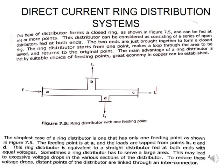The advantage is that by suitable choice of feeding points, you could have greater economy in the copper used in the system. Your line length might be shorter than going from A to D or A to C directly, because now you're just going from A to B and D to A, with shorter lines in between. The simplest case of a ring distributor is one with only one feeding point. Point A is the feeding point, and loads are tapped at B, C, and D, represented by IB, IC, and ID.